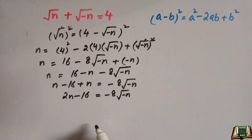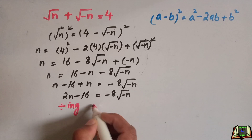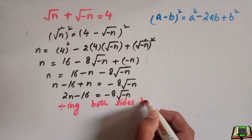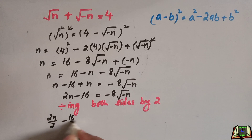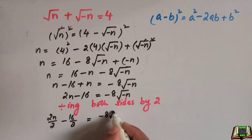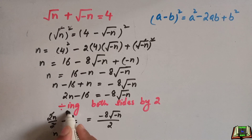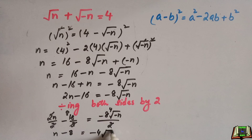At this step, we are going to divide the whole equation by 2. Dividing both sides by 2: 2n divided by 2 minus 16 divided by 2 equals minus 8 square root of minus n divided by 2. This simplifies to n minus 8 equals minus 4 square root of minus n.